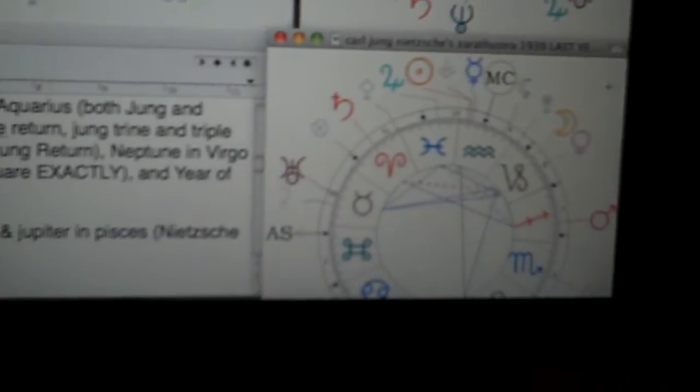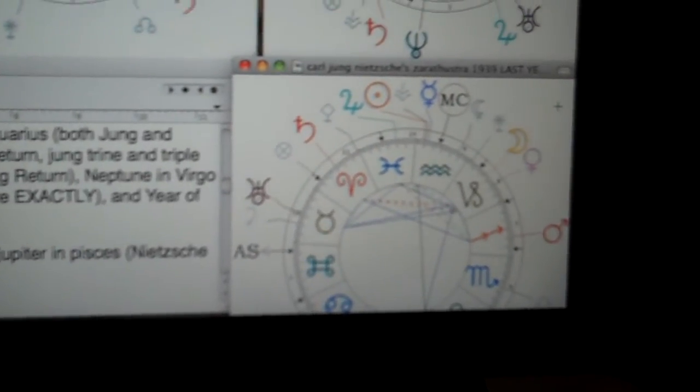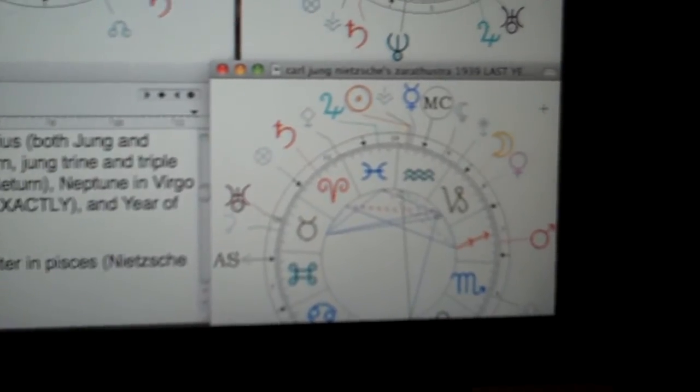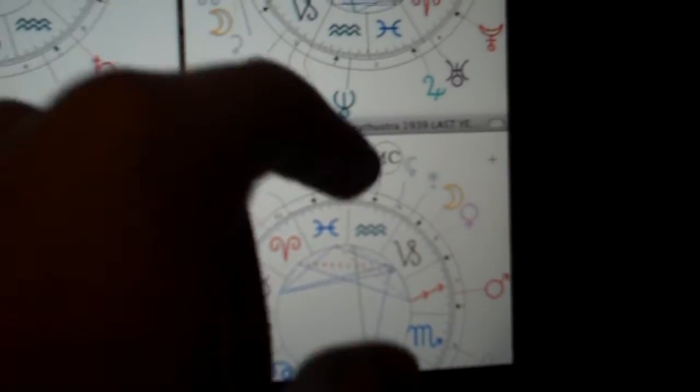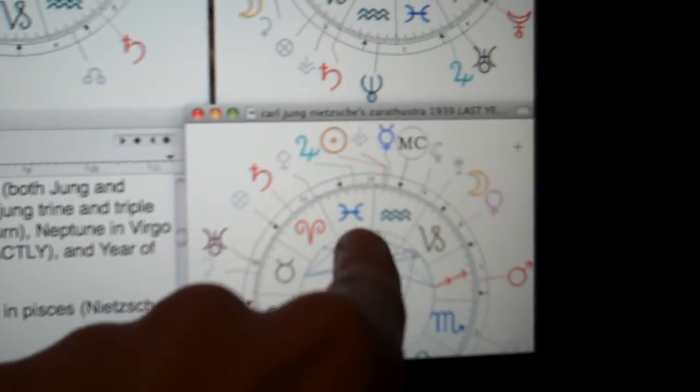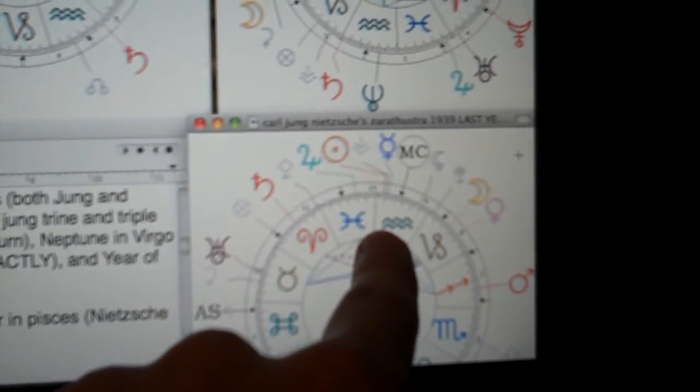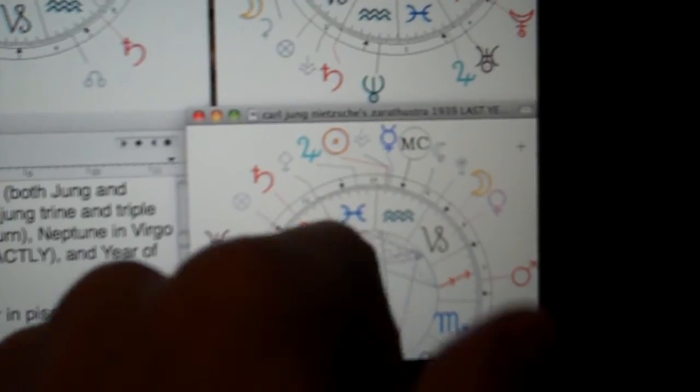This last chart right here is the very last month in which he began to write to finish the Zarathustra critique. And what's interesting is that 1939, February, is the archetype of Aquarius rabbit, which is me.